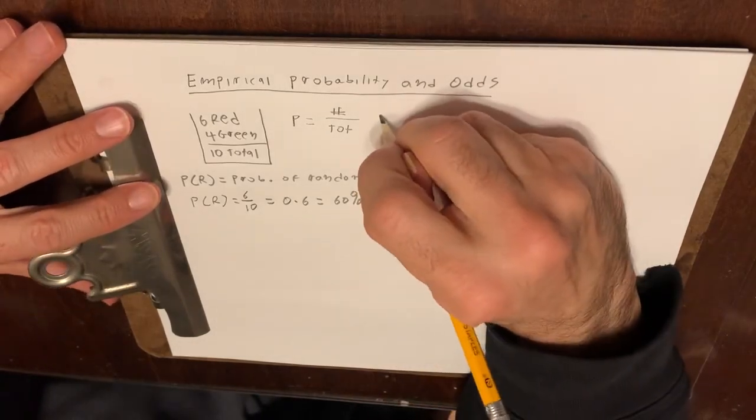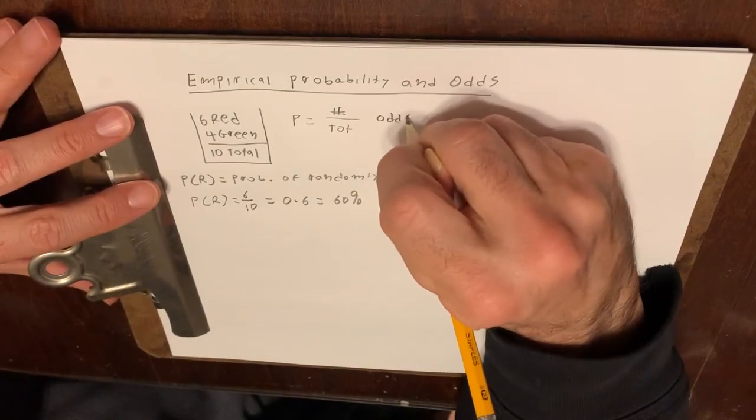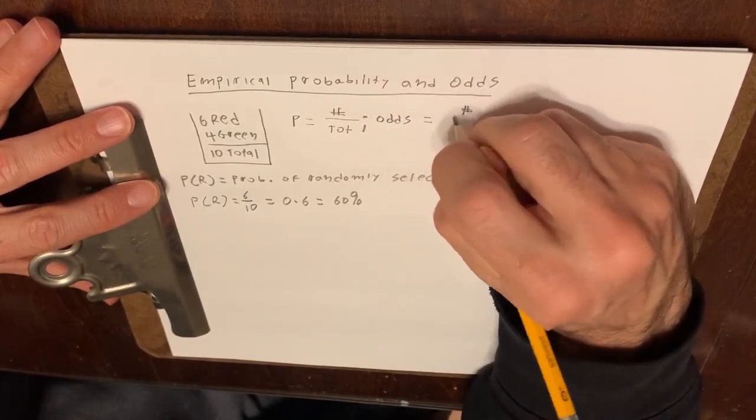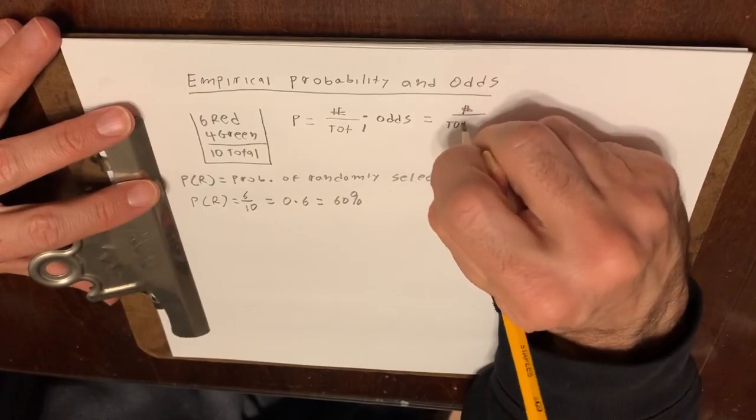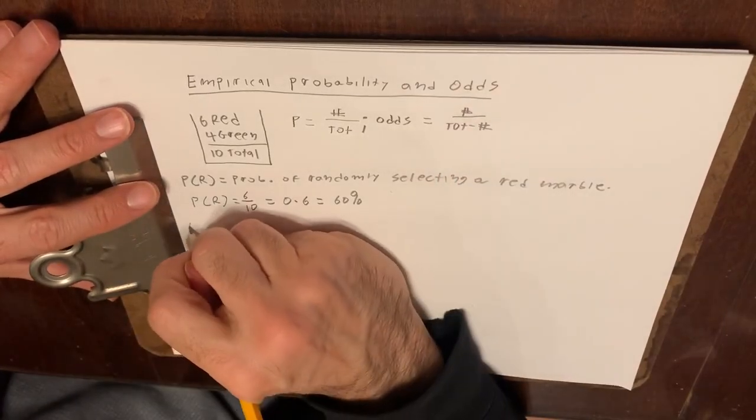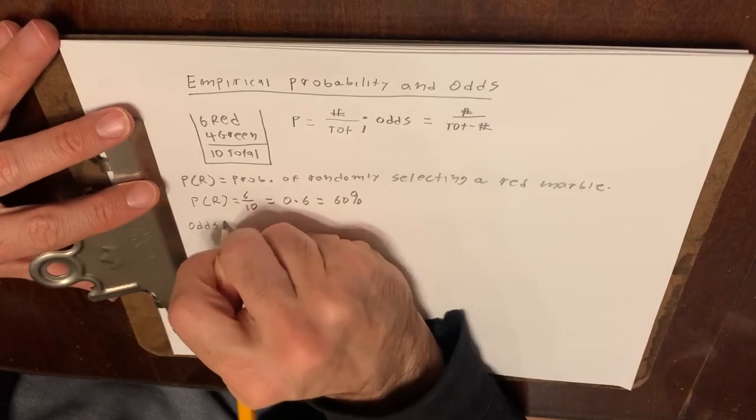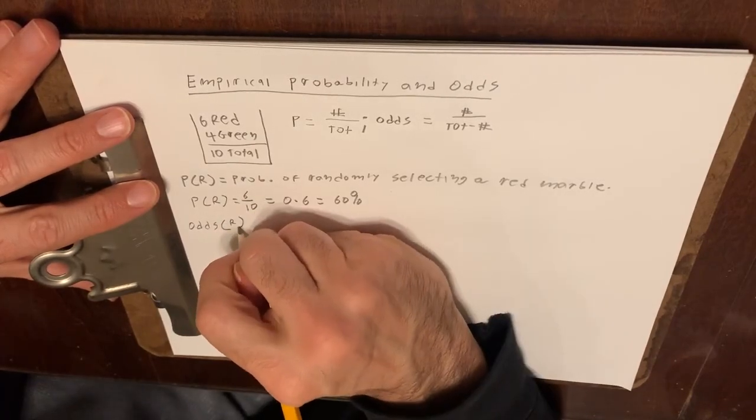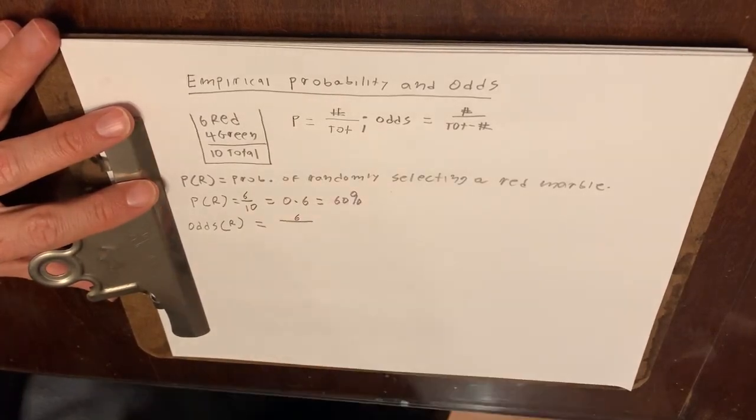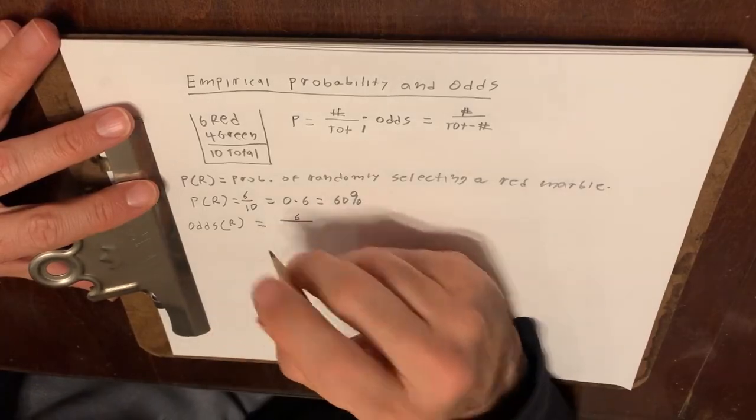Now, odds by comparison is equal to the number divided by the total minus the number.